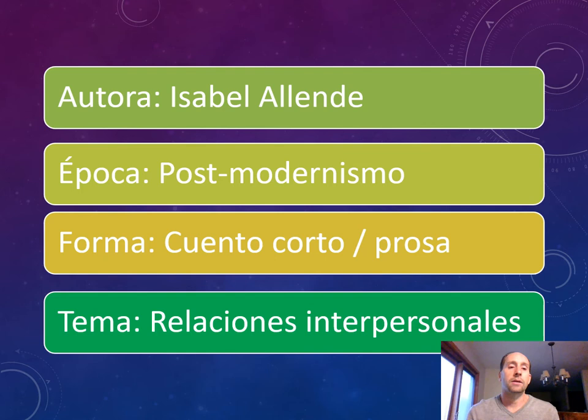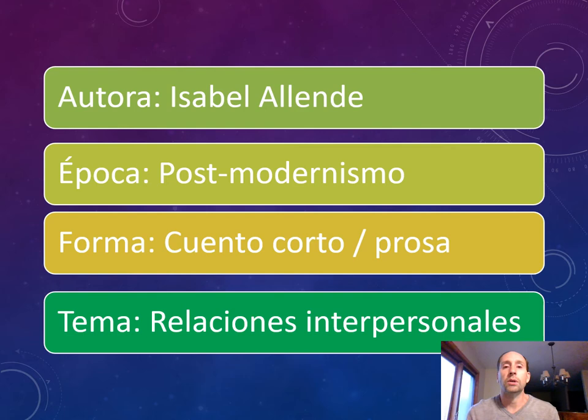La autora: Isabel Allende. La época: post-modernismo. La forma: cuento corto y prosa. El tema: relaciones interpersonales. So the author is Isabel Allende, the time period is post-modernism, it's in the form of a short story or prose, and the theme that it relates to is interpersonal relationships.